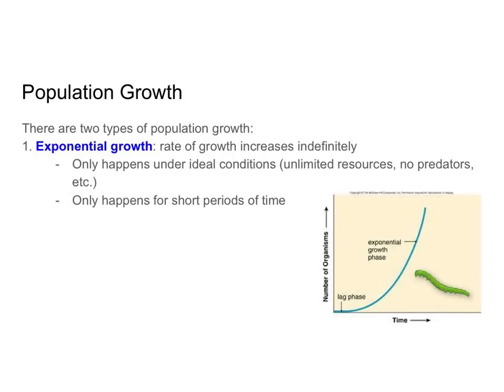Let's look at something else related to how populations grow. There are two different ways that populations can grow. The first is called exponential growth, which basically means the rate of growth will increase indefinitely. At every generation you're more or less doubling your population size, and the curve gets steeper and steeper, meaning the rate of growth is getting higher and higher.